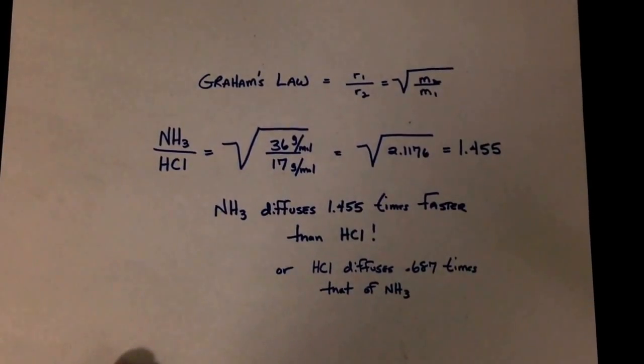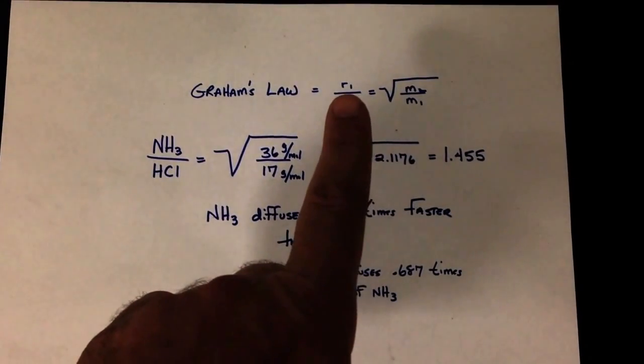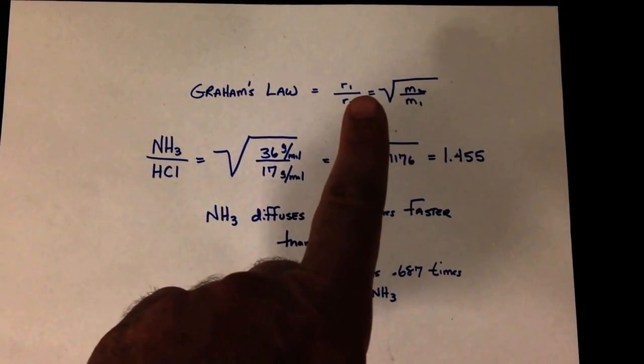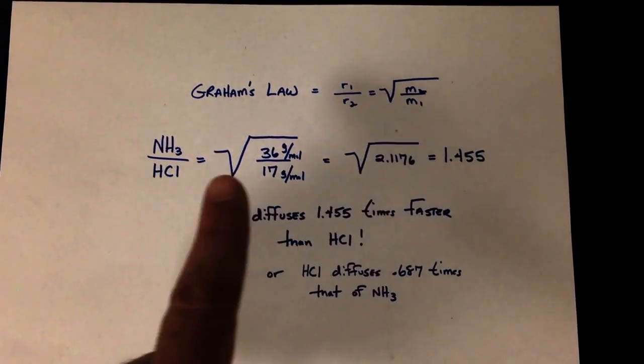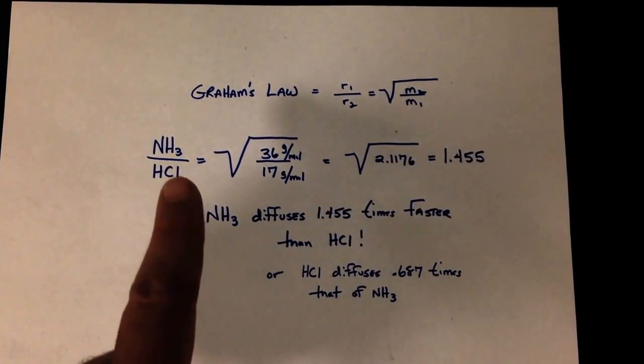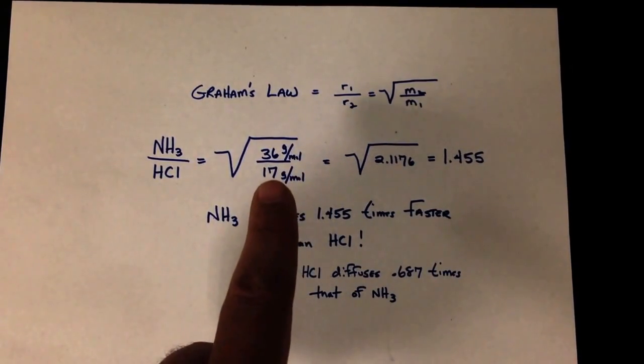you'll see that Graham's Law, which is the rate, is equal to the square root of the inverse of its mass. And if I take ammonia over hydrochloric acid, the molecular mass of ammonia is 17.